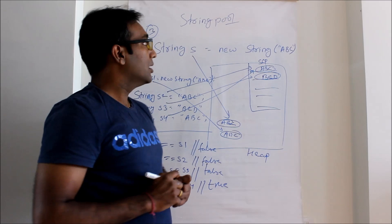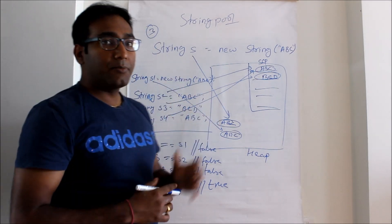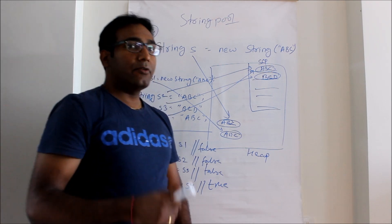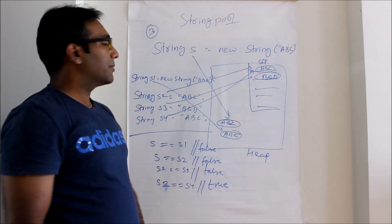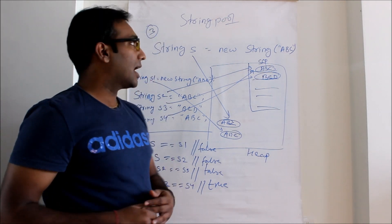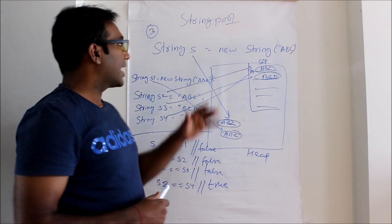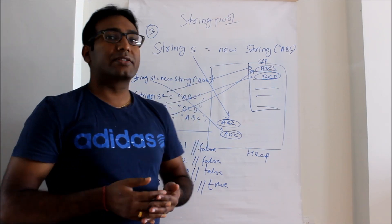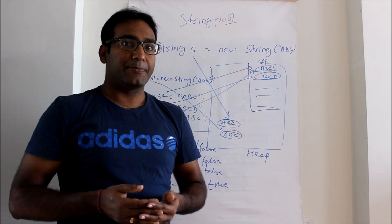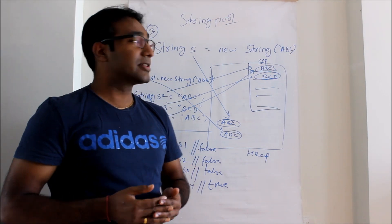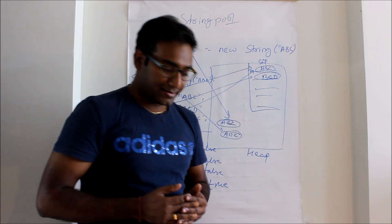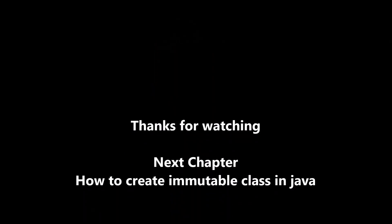So this is the string pool concept. Hope you like this video. Now this string pool benefit exists because string is immutable. In the next tutorial we will see what is immutable and how we can create an immutable class, along with an interesting question: how can you prove that string is immutable? Till that time, bye bye and have a nice day.